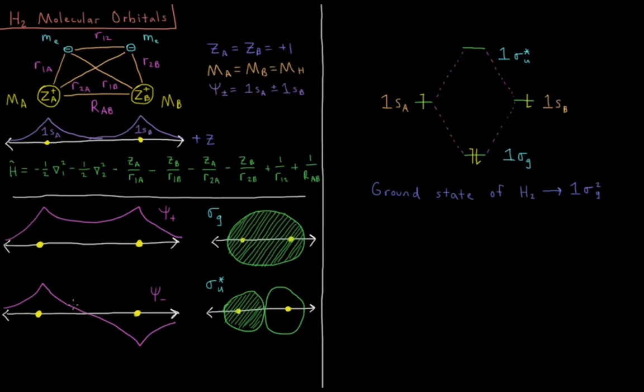In addition to that, there is a depletion of density between the two nuclei. This node here causes density to be pushed to the outside, pushes the energy up above the energy of two hydrogen atoms separated. So this, in fact, results in anti-bonding. So this sigma u is an anti-bonding orbital, which we indicate by this superscript star up there. So sigma u star anti-bonding orbital and a sigma g bonding orbital.